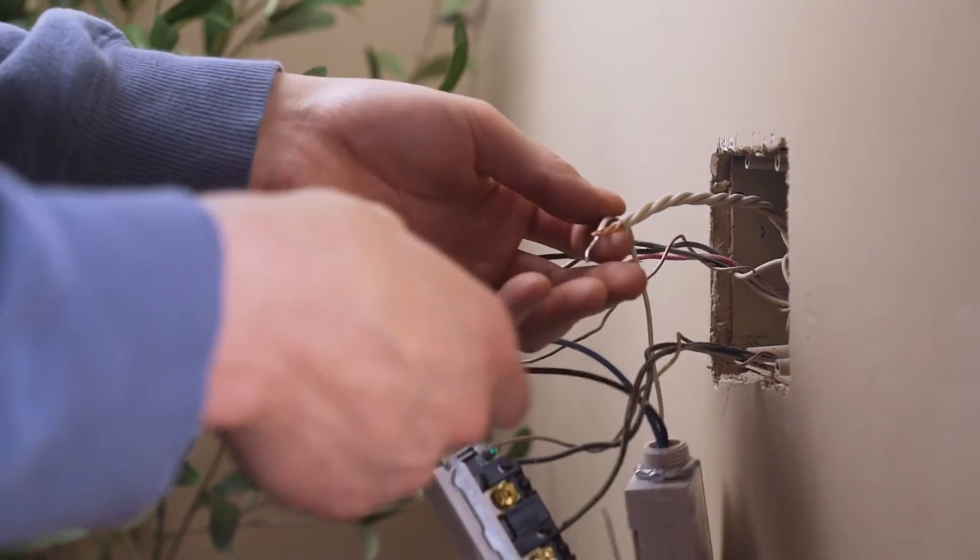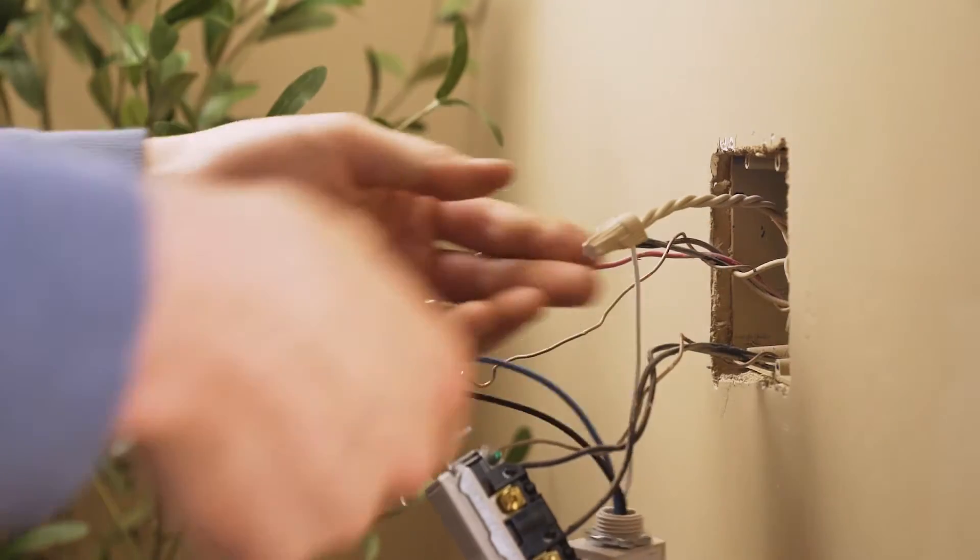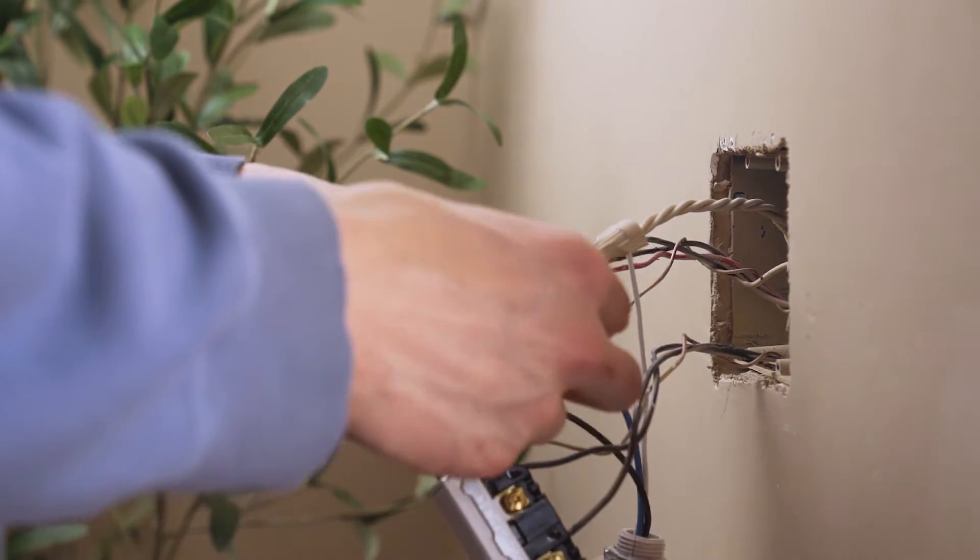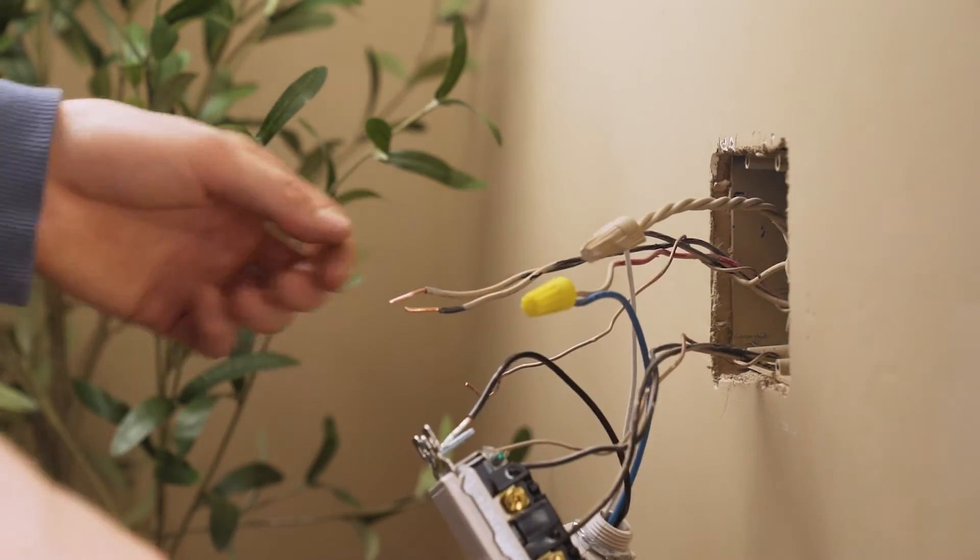Remove the wire nut and connect the white wire from the relay to your two neutral wires. Now take the blue wire from the wireless relay and connect this to the wire that runs to your lights.